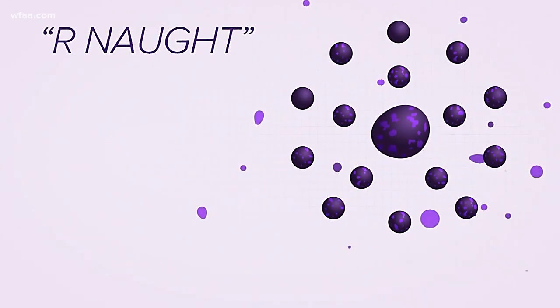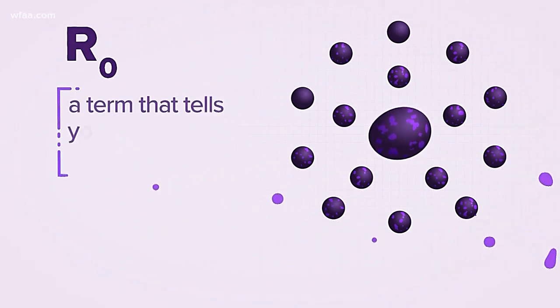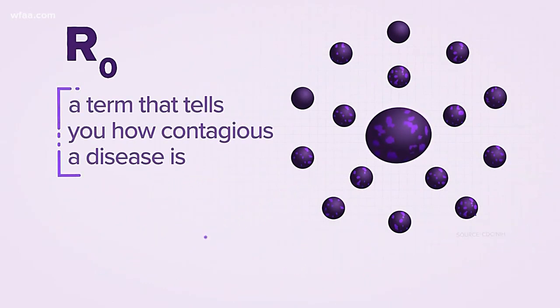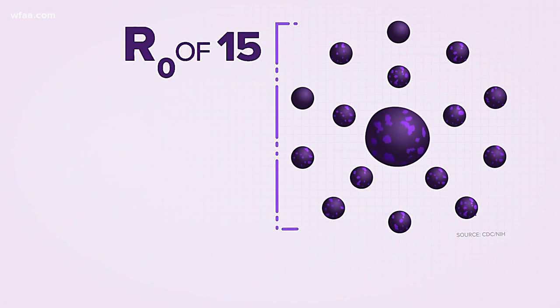Science tells us eventually you will infect 15 others thanks to something known as an R-naught. Yes, R-naught. It's a fancy term that tells you how contagious a disease is.